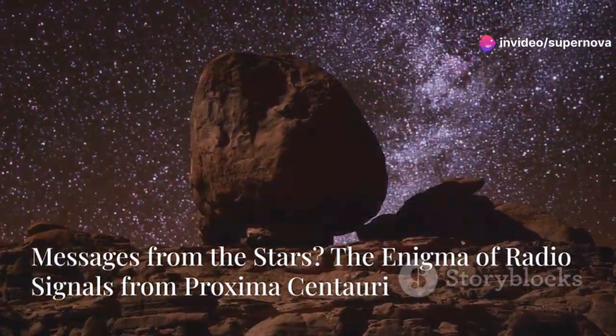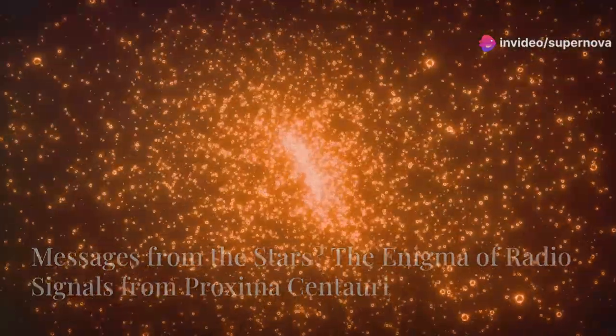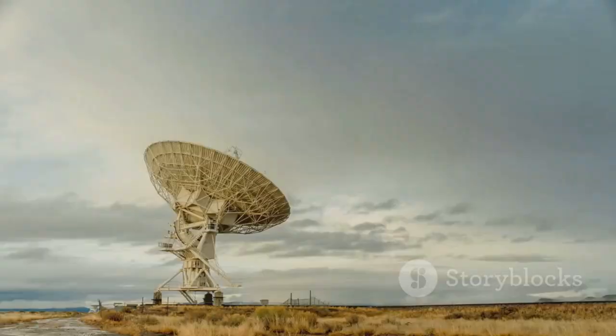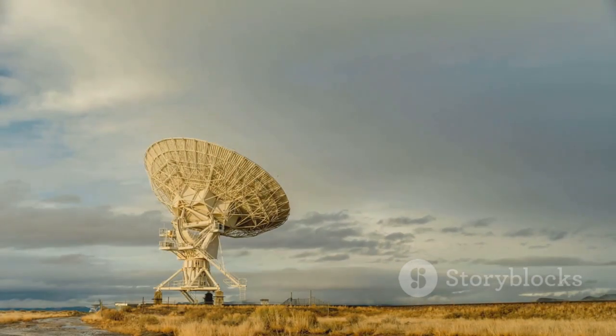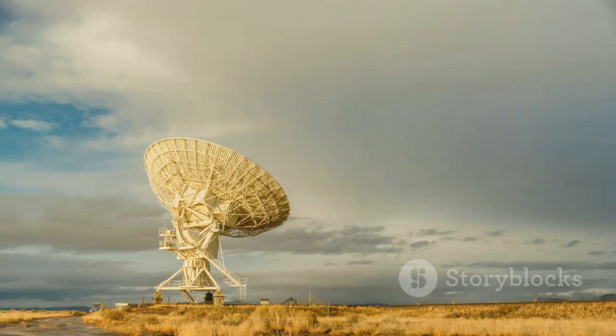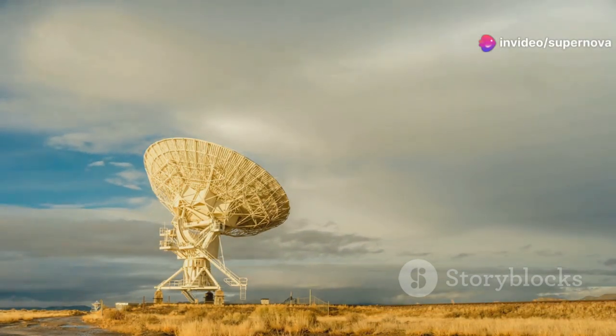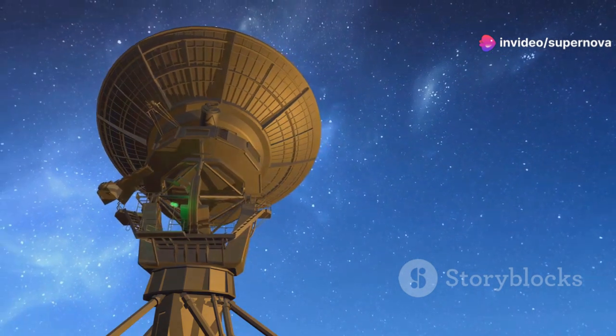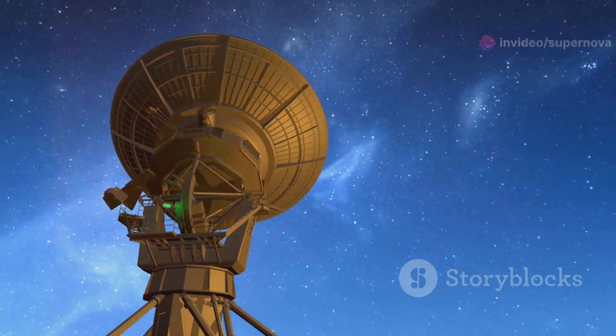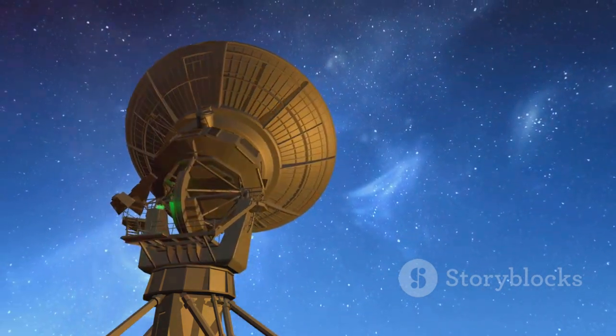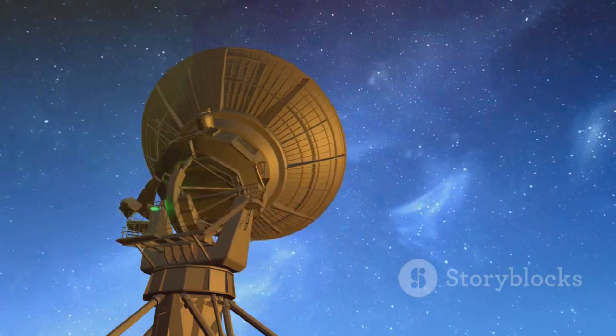Messages from the stars. The enigma of radio signals from Proxima Centauri. In 2020, a mysterious radio signal was detected coming from the direction of Proxima Centauri, the closest star to our solar system. This signal, dubbed BLC-1, was picked up by the Parkes Radio Telescope in Australia, a facility renowned for its contributions to radio astronomy.